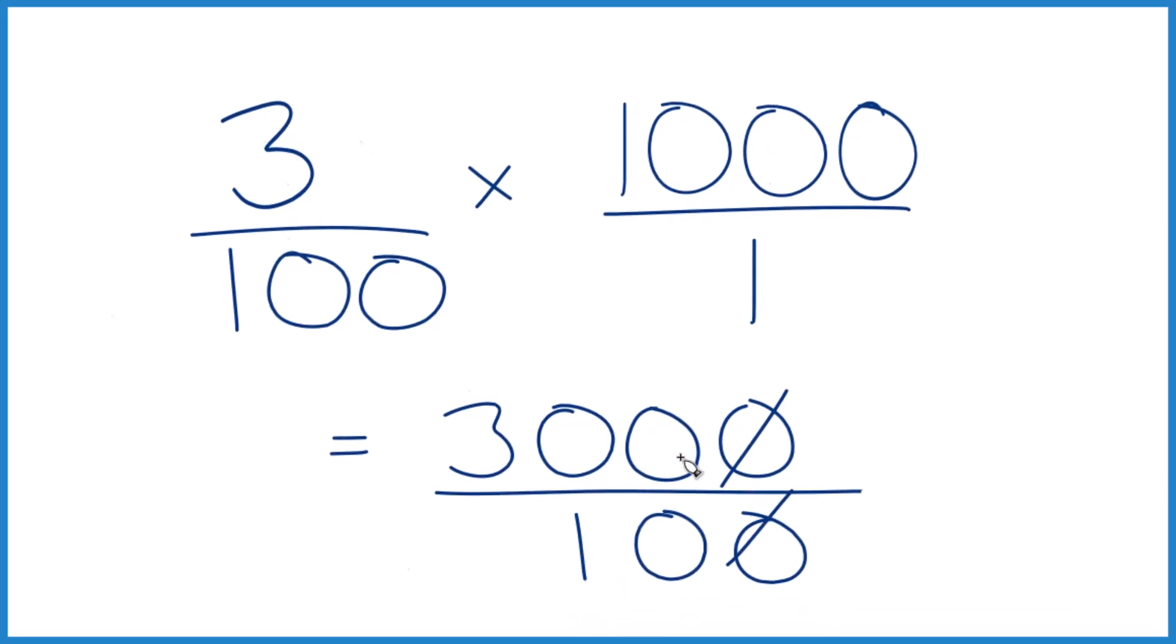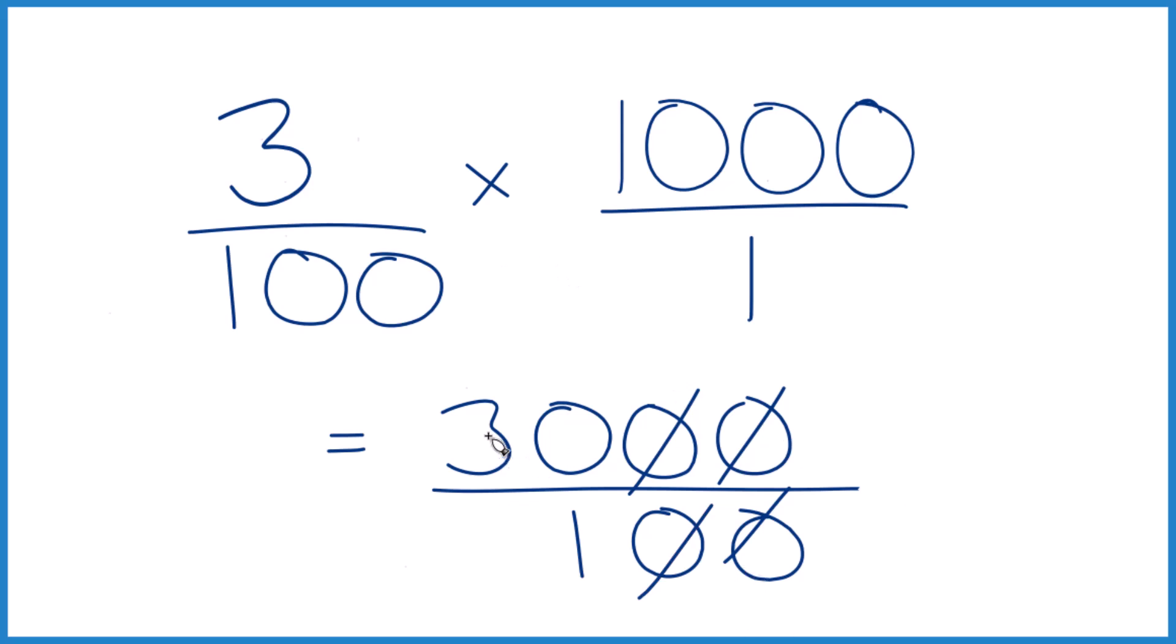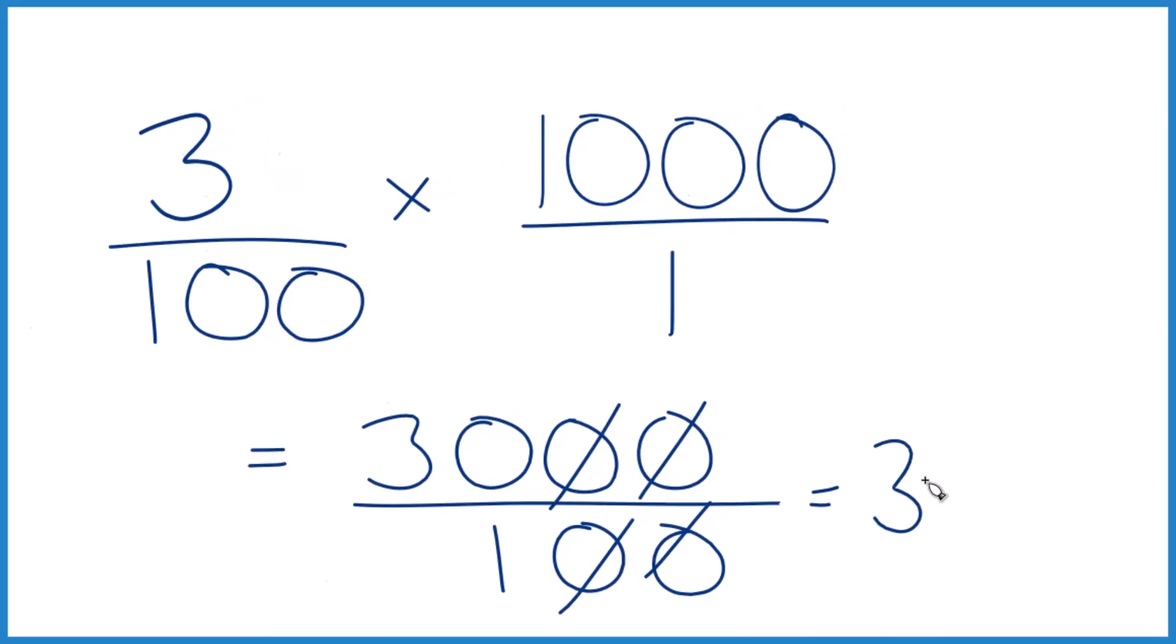So we can cross these out here, or just divide. We get 30 over 1, that equals 30. So 3% of 1,000 is 30.